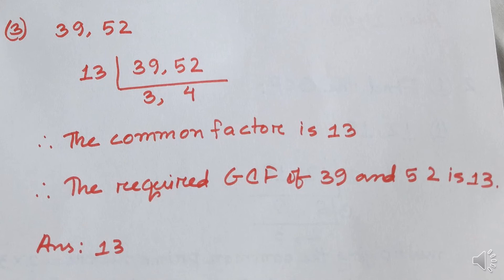For number 3, we have 39 and 52. There are not many common factors. We divide both by 13: 39 ÷ 13 = 3 and 52 ÷ 13 = 4. Therefore, the required GCF — the greatest common factor — of 39 and 52 is 13. The answer is 13.